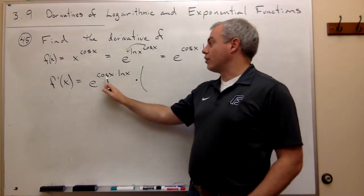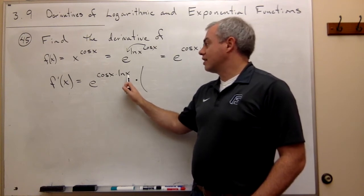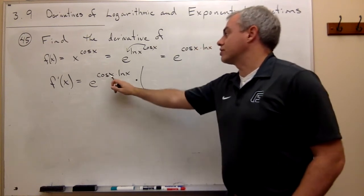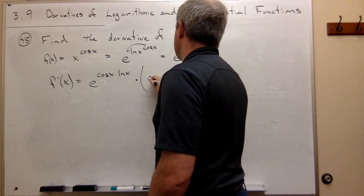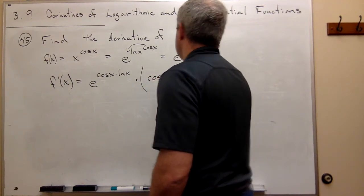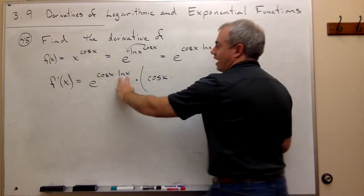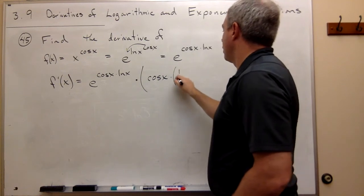But the power itself is a product. So to take the derivative of cosine x ln x, I need to use the product rule. So it's the first, which is cosine of x, times the derivative of ln of x, which is 1 over x,